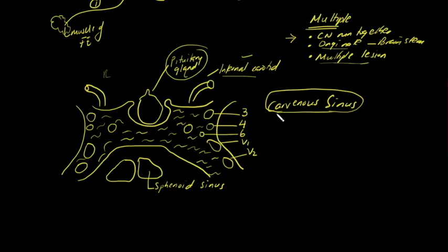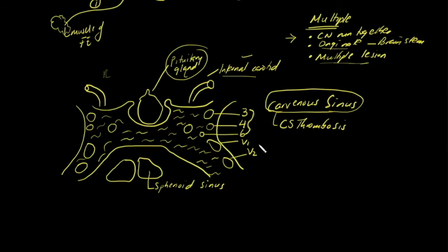If you have a patient with cavernous sinus thrombosis, they typically have marked ophthalmoplegia — they can't move their eyes — because cranial nerves three, four, and six are responsible for the extraocular muscles. They also can't feel in the V1 and V2 distributions, and may even have muscle atrophy or decreased bulk of the masseter or temporalis.